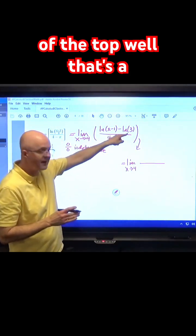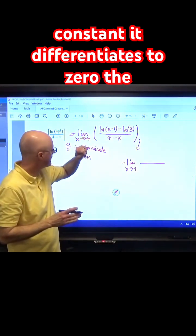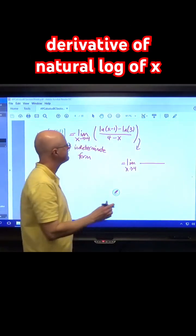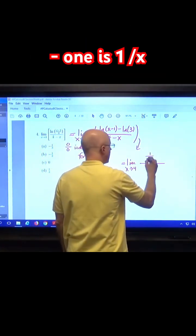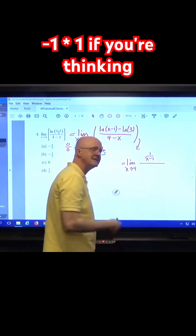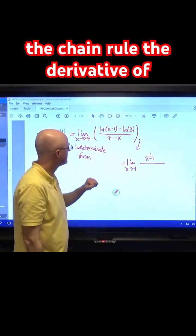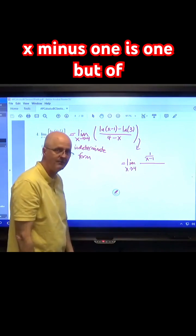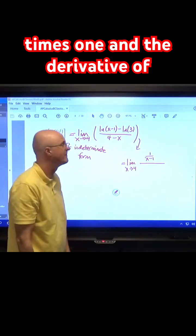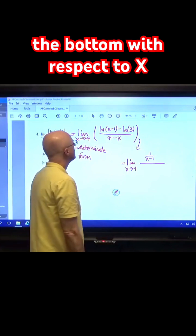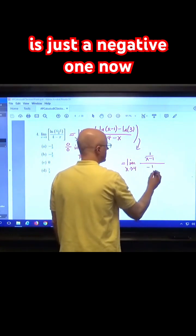The derivative of the top, well that's a constant, it differentiates to 0. The derivative of natural log of x minus 1 is 1 over x minus 1 times 1 if you're thinking in chain rule. The derivative of x minus 1 is 1, but of course I don't have to write times 1. And the derivative of the bottom with respect to x is just a negative 1.